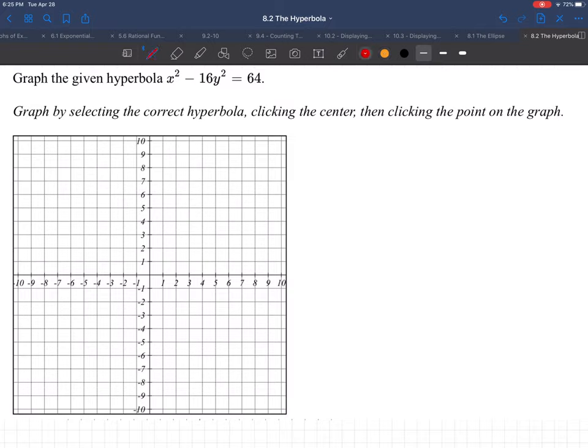For a hyperbola equation, we must have 1 on the right side. It's just like for ellipses. Ellipses and hyperbolas, we've got to have 1 on the right side.